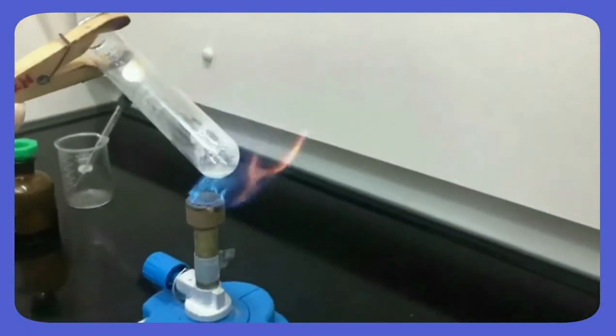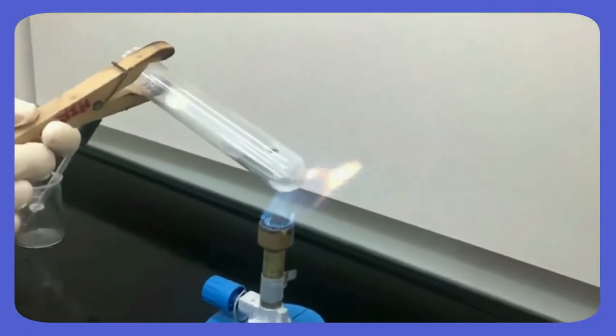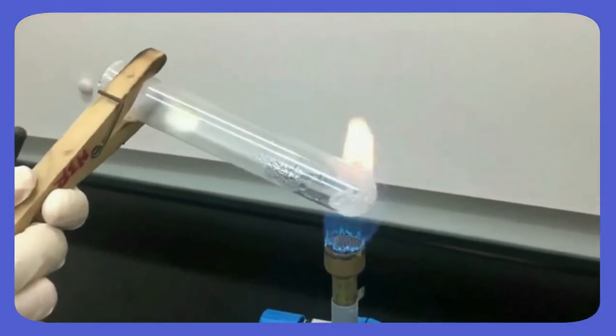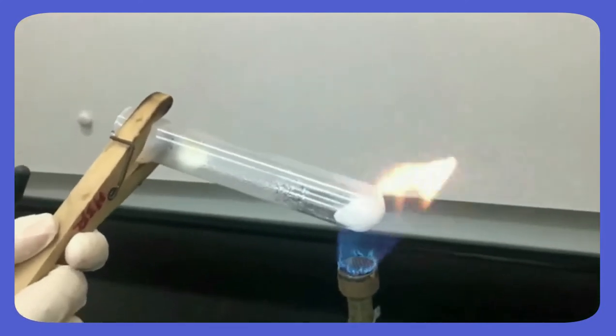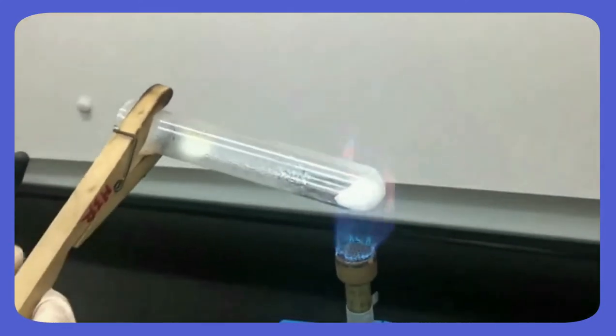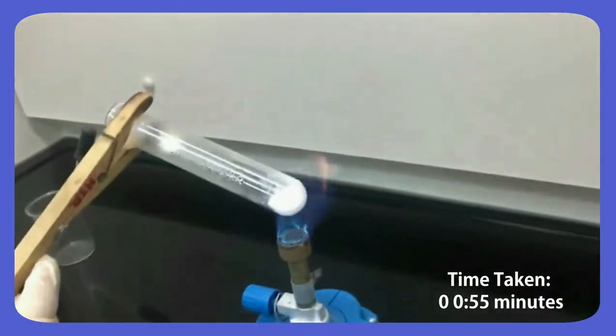Next, we will heat the hydrated calcium nitrate gently with small flame until anhydrous calcium nitrate is formed. After that, we use big flame to heat the anhydrous calcium nitrate. We will observe the color of gas that is formed throughout the heating process.